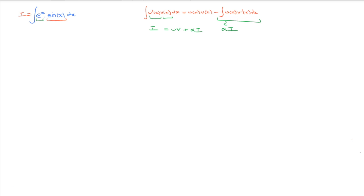Step one is simply to name the integral. We write: let capital I equal to the integral of exponential of x times sine of x. That's step one finished.